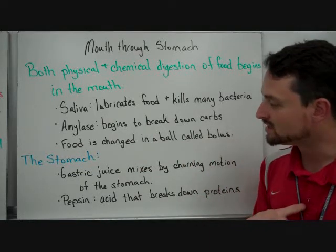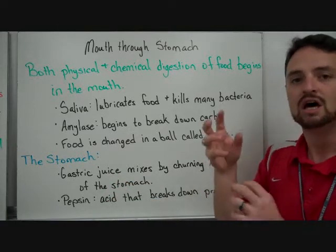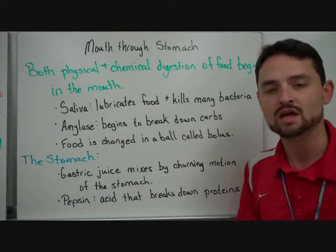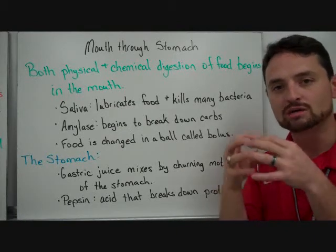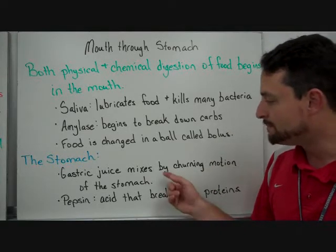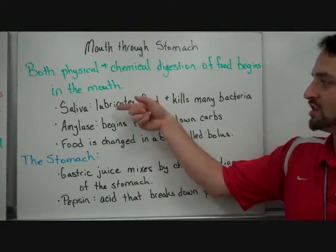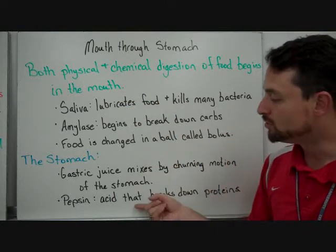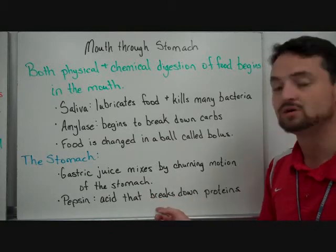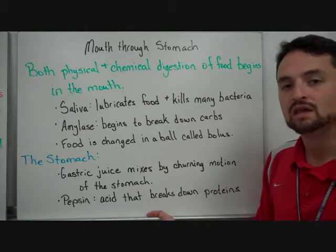In the stomach, food mixes with gastric juices through a churning motion. That churning motion also causes your stomach to growl when there's nothing in there for it to churn. It will be mixing primarily with pepsin, which is an acid. There's a very strong acid change from your mouth, which is pretty neutral, to pepsin in the stomach, which has a pH of about 2. This will break down proteins — carbs begin breaking down in the mouth, while proteins begin to be broken down in the stomach.